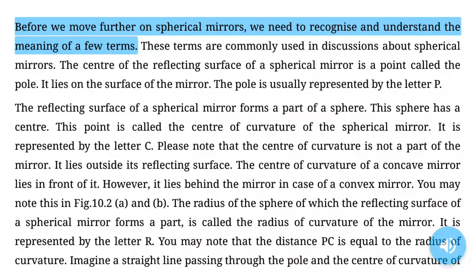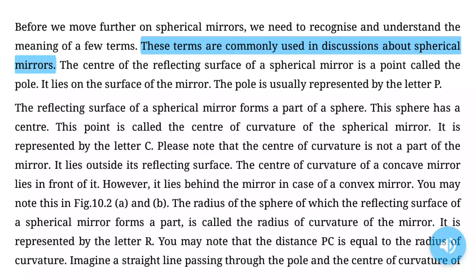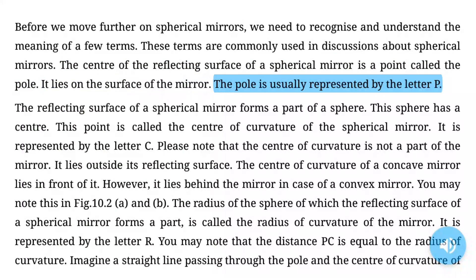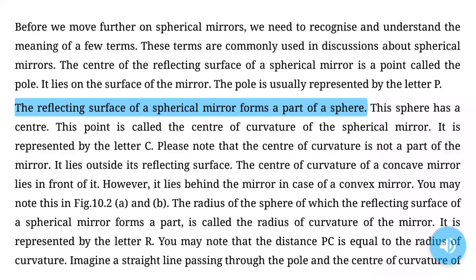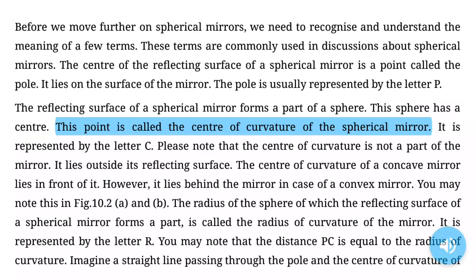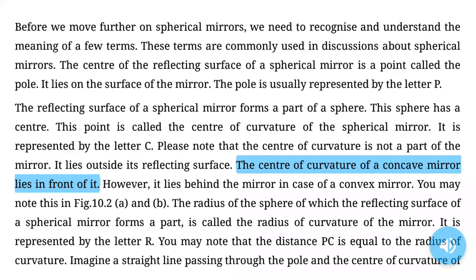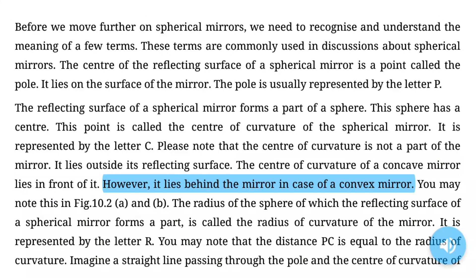Before we move further on spherical mirrors, we need to recognize and understand the meaning of a few terms. The center of the reflecting surface of a spherical mirror is a point called the pole, represented by the letter P. The reflecting surface forms a part of a sphere whose center is called the center of curvature, represented by the letter C. The center of curvature of a concave mirror lies in front of it, while it lies behind the mirror in case of a convex mirror.